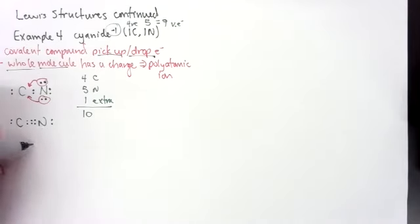So when I draw this Lewis structure, I'm going to go like this. But because it's a polyatomic ion, I have to put the whole thing in brackets and I have to put the charge outside the brackets. So that's something extra we have to add.